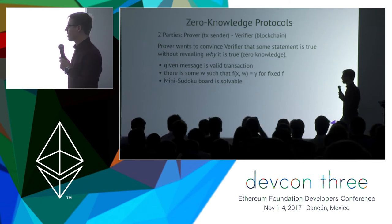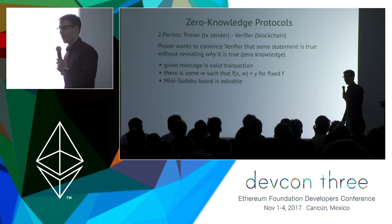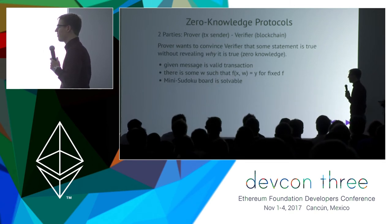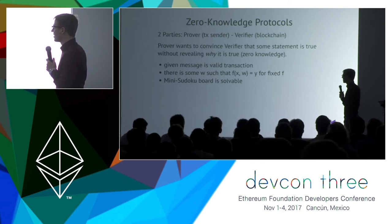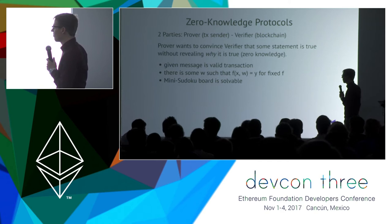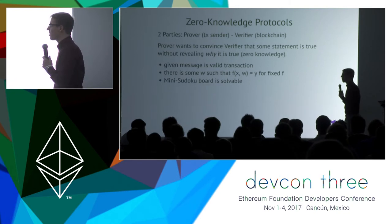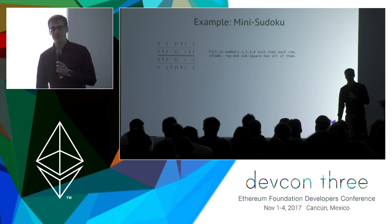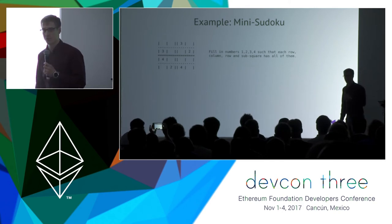Examples of such statements are that a given message is a valid transaction in the blockchain. Or, more abstractly, there exists a W such that F(X, W) = Y for a fixed function F. A more specific example: a mini Sudoku board is solvable. Mini Sudoku is a smaller four-by-four version of the regular nine-by-nine Sudoku.